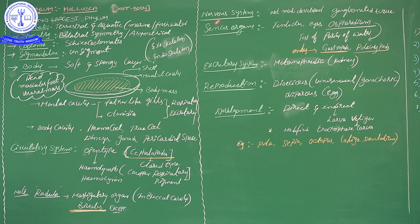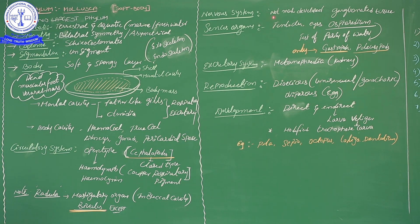The nervous system of mollusca is not yet much developed — the brain is poorly developed compared to arthropoda. Only ganglionated tissue is present. Along with the nervous system, there are some sense organs: tentacles and eyes. These receive stimulations from the external environment and the organism shows a response accordingly.